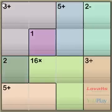Now the cages with only one square are what we call givens. So fill these in first.